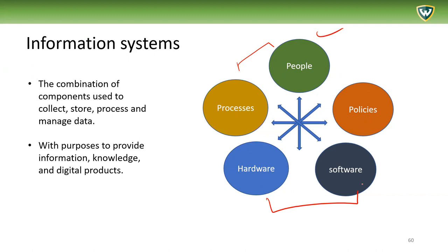Often when people talk about hardware and software, they break it up further. For example, databases are usually an important component of information systems, and may even be conceived as separate from other types of software. There is also database-specific hardware. Throughout the course, we'll delve in more detail on the specific hardware and software components. When we think of information systems, it is the interaction of these various components together.